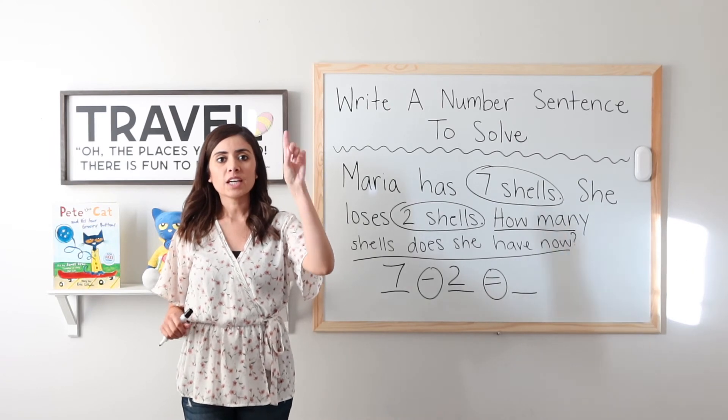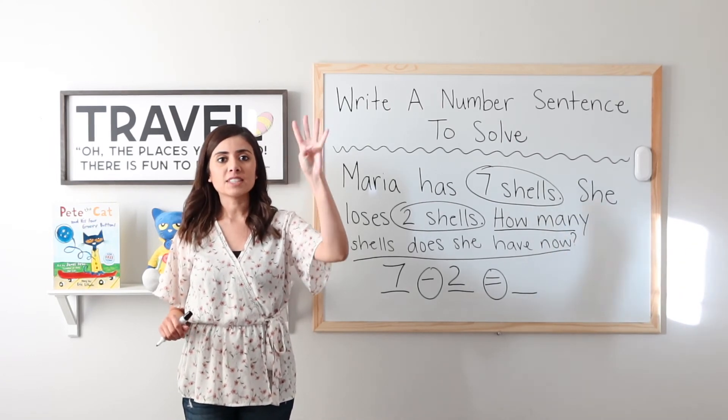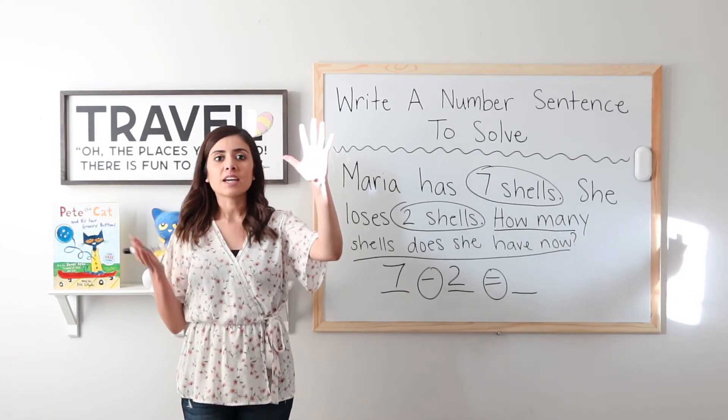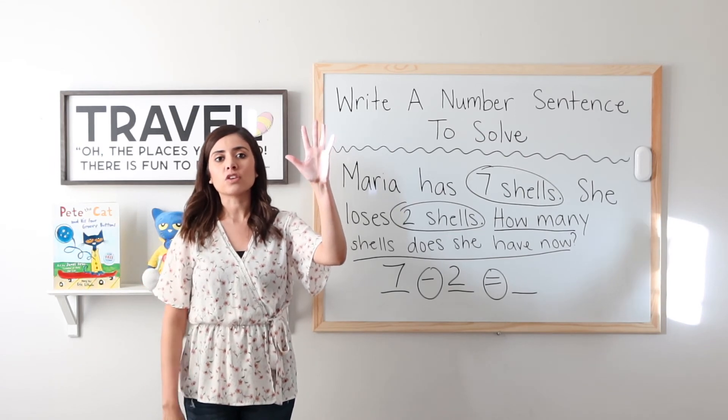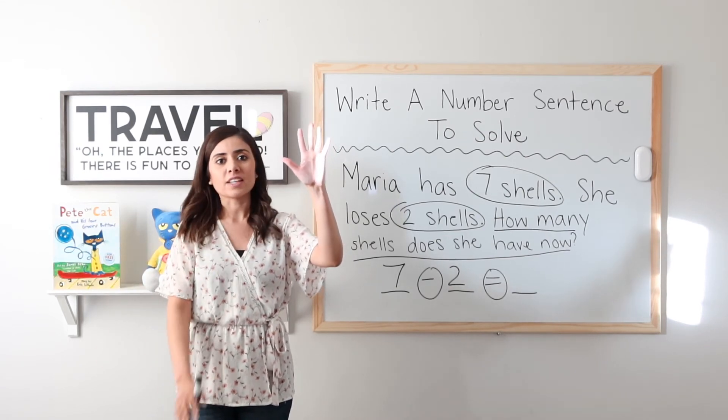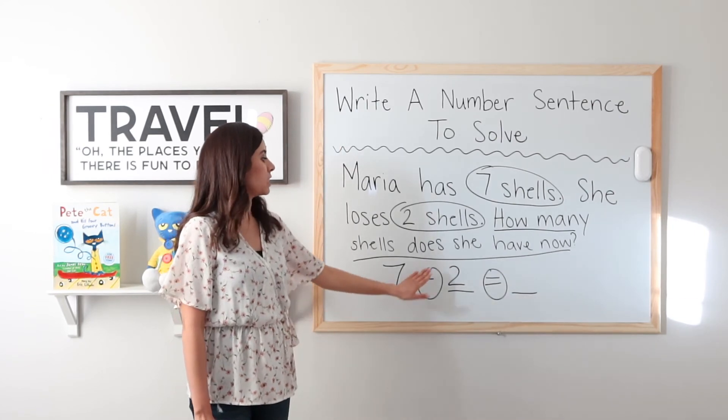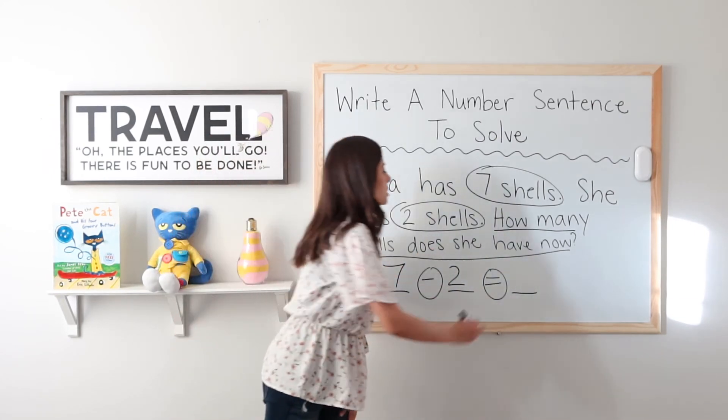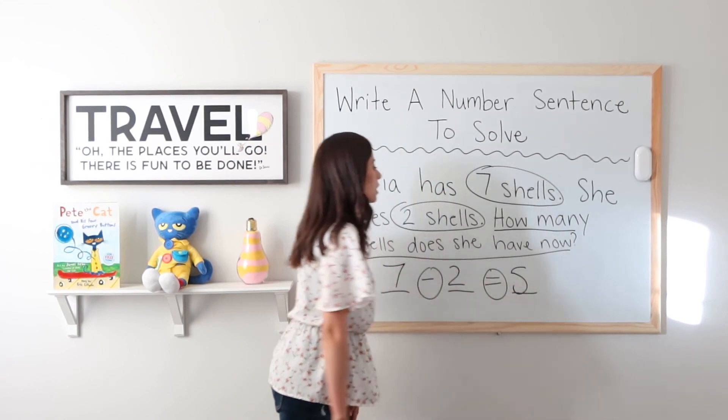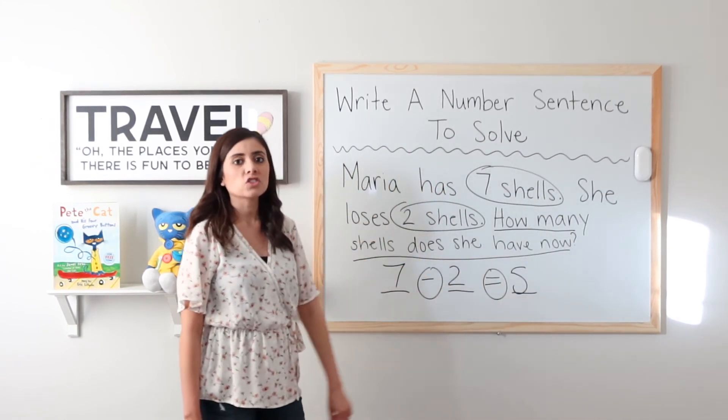Two, three, four, five, six, seven. How many fingers did it take to jump from two to seven? Five. That means that seven minus two equals five. She has five shells now. Very good.